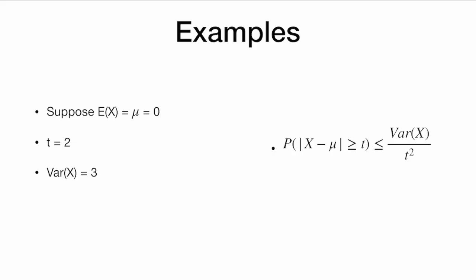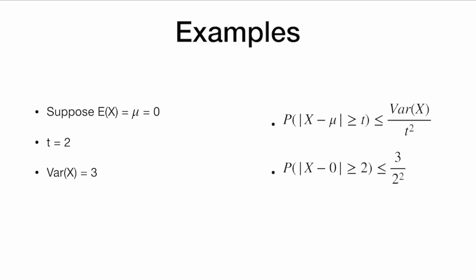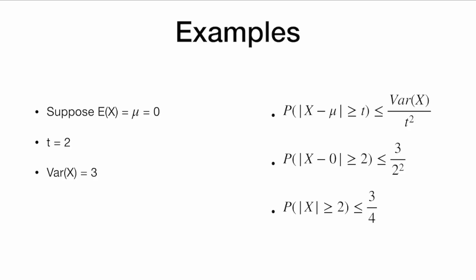Let's see this in an example. Suppose E[x] = 0, t = 2, and Var(x) = 3. Applying Chebyshev's inequality, the probability that the absolute value of x minus 0 is at least 2 is less than or equal to the variance of x, which is 3, over 2 squared. Simplifying, the probability that |x| is at least 2 is less than or equal to 3/4.